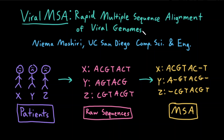First, what is multiple sequence alignment? Imagine I have these patients X, Y, and Z, and when these patients come to the clinic, I could theoretically sequence their viral samples and collect a viral sequence from each of these patients. You'll notice that these sequences look very similar, but they're a little bit off — they don't quite line up. But you can imagine if I were to stick in a few spaces, gaps I'll call them, I could make these line up much better.